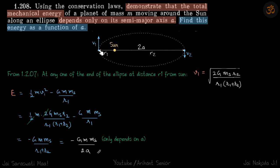So let's find it at one of the extreme points. Let's say we find that mechanical energy at this point, and again from conservation of energy it's going to be the same at every point on this ellipse.